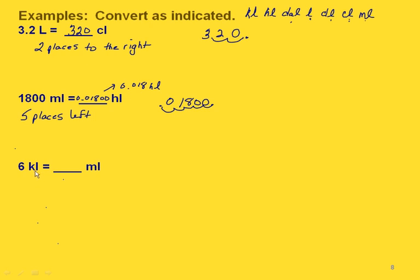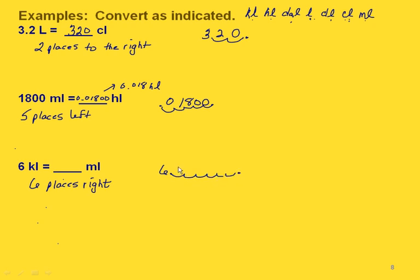What if we're going from kiloliters to milliliters? Starting with kiloliters, we count six places to the right. So our decimal point starts after the 6, and we move one, two, three, four, five, six places to the right — writing in a zero for each place. That gives us six zeros written in, so 6 kiloliters equals six million milliliters.